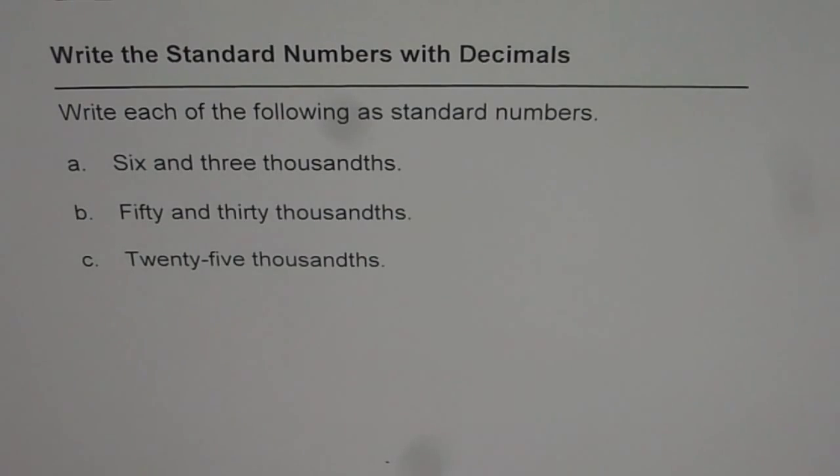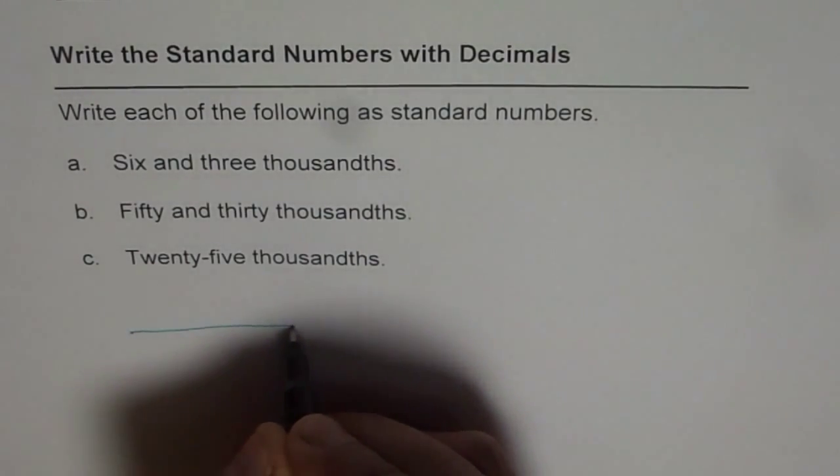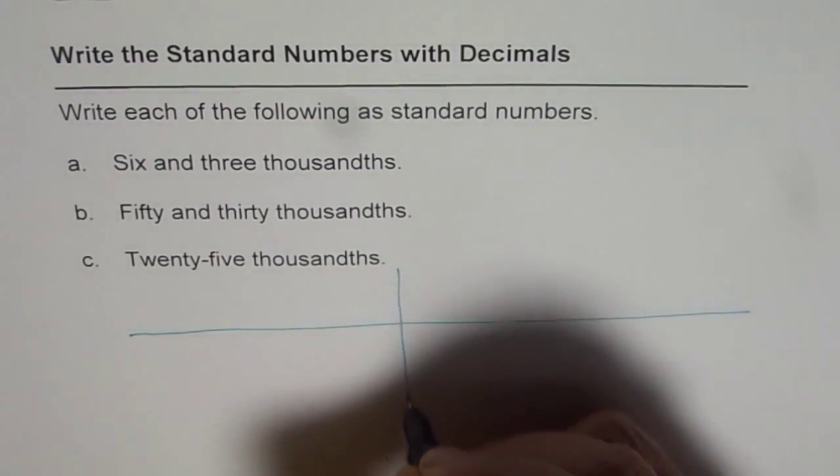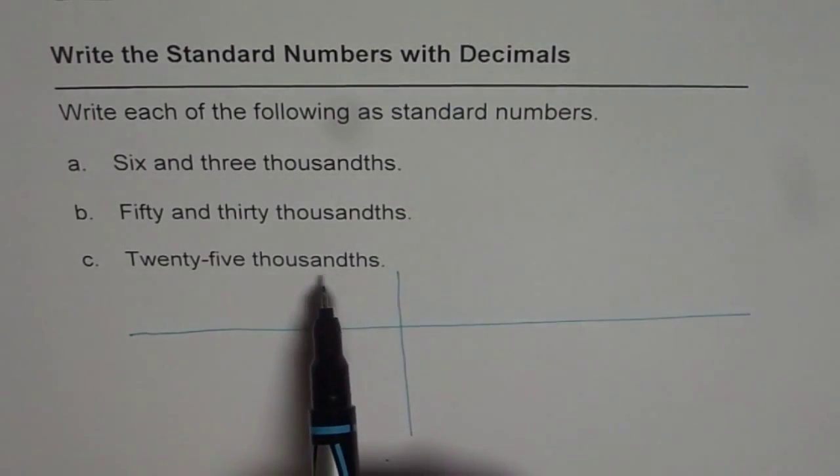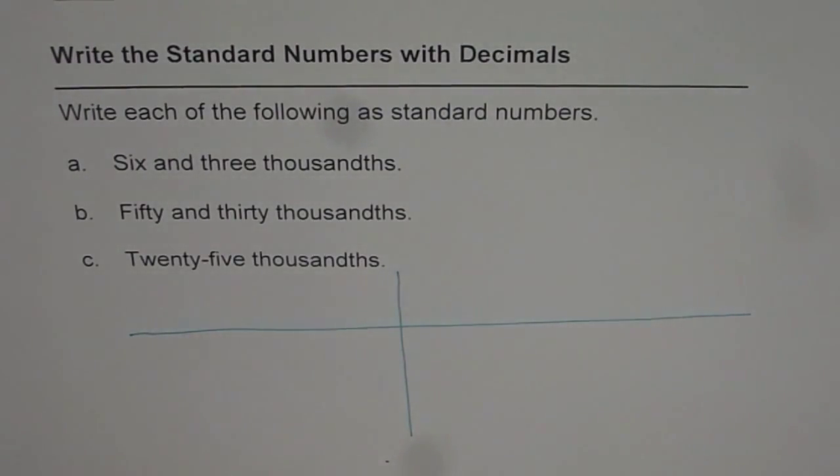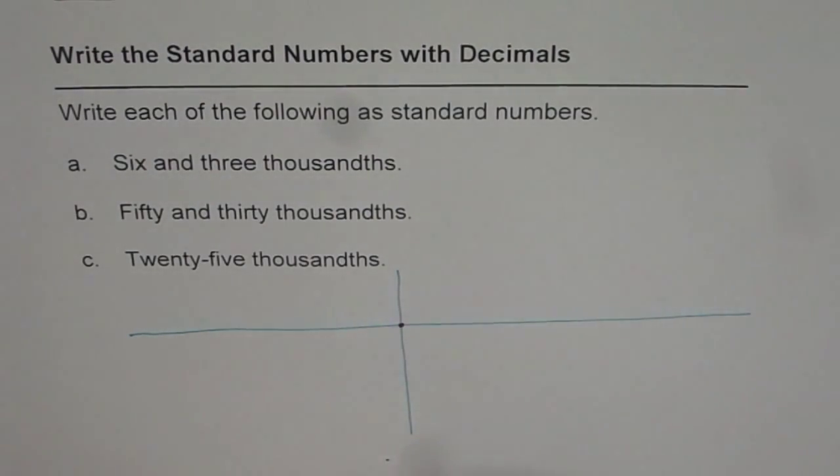So these are the three numbers which we need to write. To figure it out, let us make our place value chart. Now this place value chart has to have decimal numbers since we are talking about thousandths. So we will go up to thousandths. So in decimals, let us say that is our decimal point.